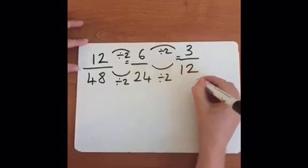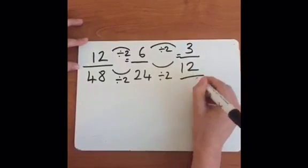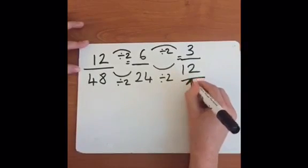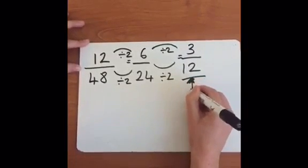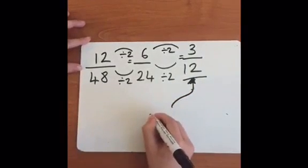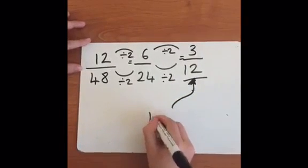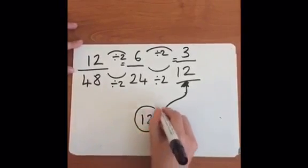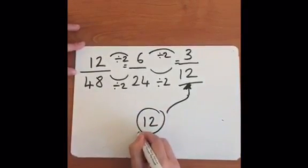Now you might have noticed that we've now got an odd number. That means we can't continue using this method. We've got 3/12, but we need to check if that's in its simplest form. Now to do that, we're going to go back to Method 1. We're going to write down the factors of each of these numbers. Now Miss Sheldon knows the only factors of 3 are 1 and 3, so she's just going to write down the factors of 12.